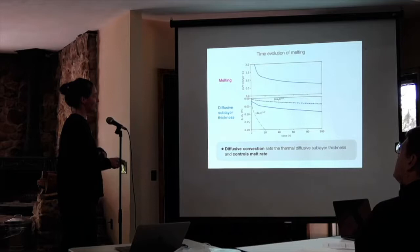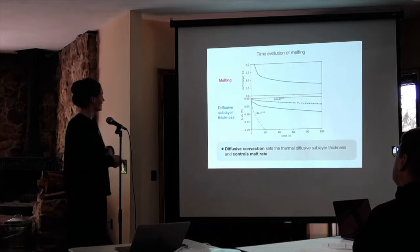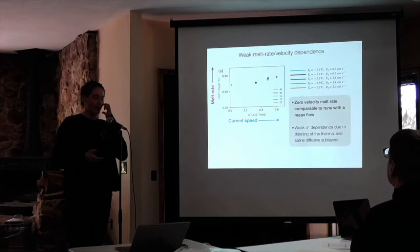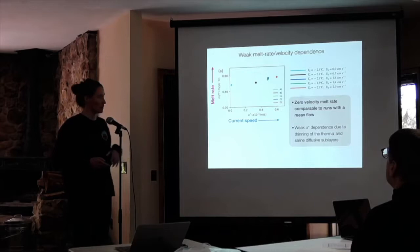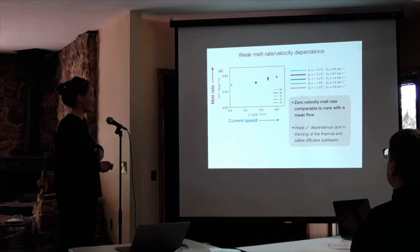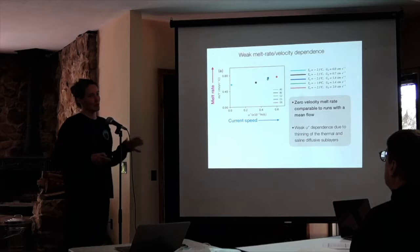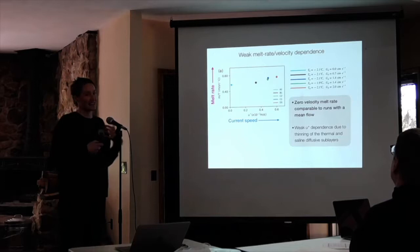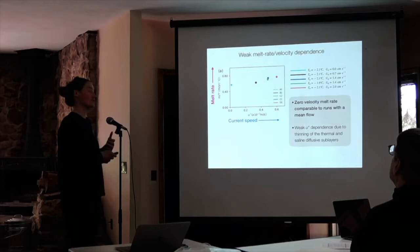The diffusive sublayer thickness is set by the process of diffusive convection. The saline diffusive sublayer thickness is up here, while the thermal diffusive sublayer is outpacing that. Beneath that region, we have a statically unstable region — that's what generates our mixed layer. What happens if we start to increase the shear from a far-field current? The conventional wisdom says shear is a controlling process, but the melt rate we get with no far-field current is actually quite similar to what we get with, say, 2 centimeters per second of far-field flow. The melt rate has a really weak dependence on current speed. Shear is not the first-order control on melting under these conditions.